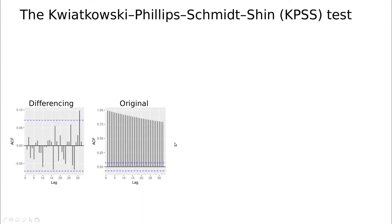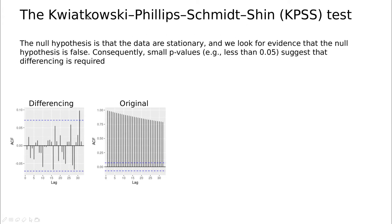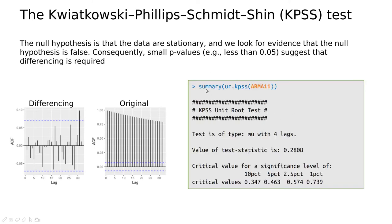You can also do this more automatically using the KPSS test — named after its creators. The idea is that you perform a statistical test and get a p-value. When the p-value is above 0.05, you can be fairly confident that no differencing is required. For example, if you take an ARMA(1,1) process — which is actually ARIMA(1,0,1) — you can see the test works well. But one of the messages of this course is that nothing trumps the human brain trying to decipher patterns.